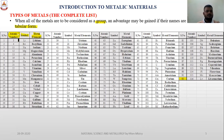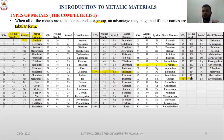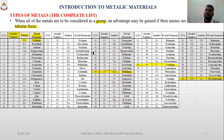For example, the first entry has atomic number 3, symbol Li, and the element is lithium. Another entry has atomic number 72, symbol Hf, and the element is hafnium. Entry 68 has atomic number 92, symbol U, and is known as uranium. There are 92 metals, each with a different atomic number, symbol, and metallic element name.